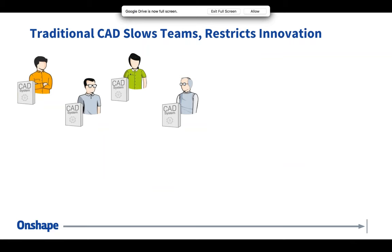With a traditional CAD system, everyone has to have a local installation. That means anyone you're sharing with needs to download anywhere from a few gigabytes to 10 gigabytes of data, install it, and license it. One of the first problems you'll run into when trying to collaborate is: do they have the right software? Do they have it installed? Do I need to send them a link? Do they need to pay for software so they can open and edit my model?